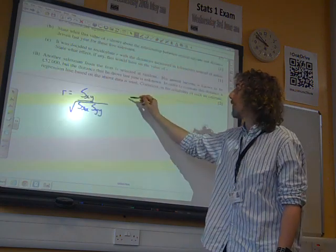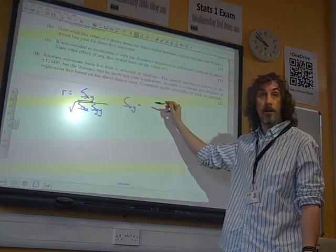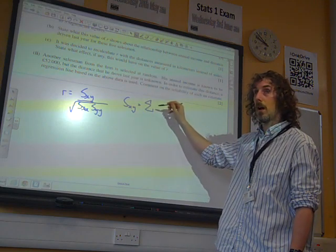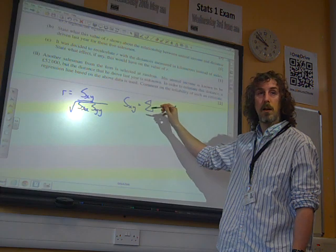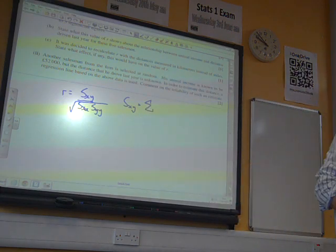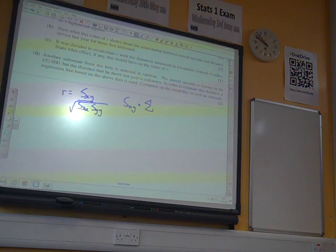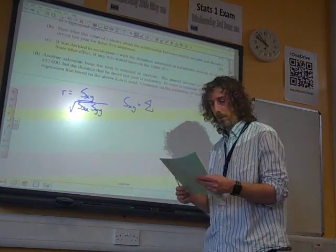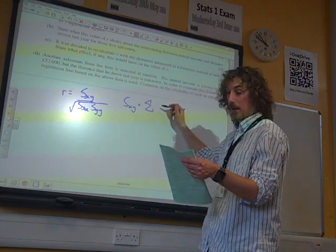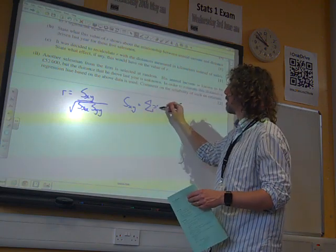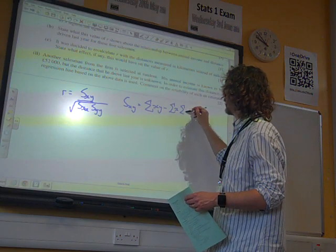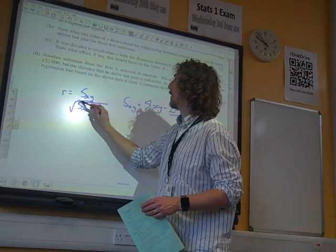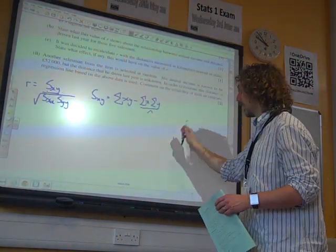So we'll do a little calculation for each of them. SXY, again, it's on the formula sheet. It says that it is sigma XY minus sigma X times sigma Y over N. I've not left any space to work these out, but I'll do that. There we go.